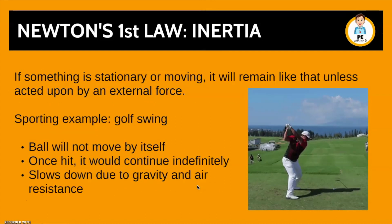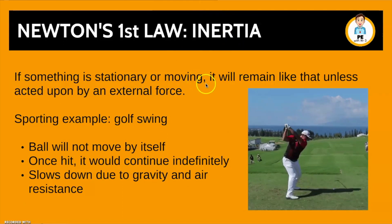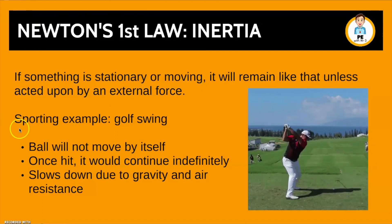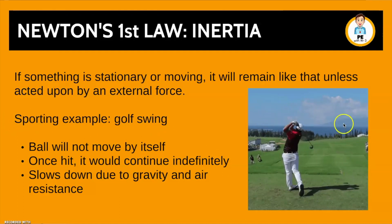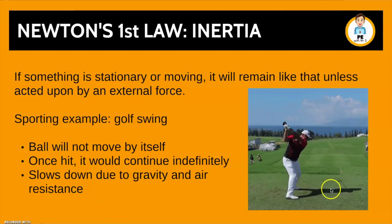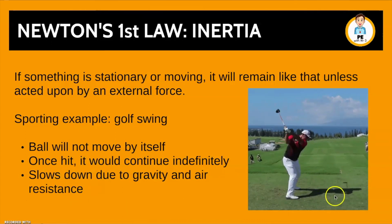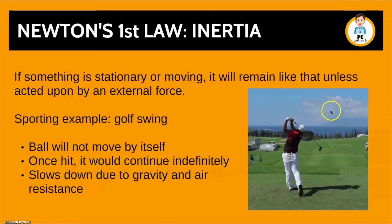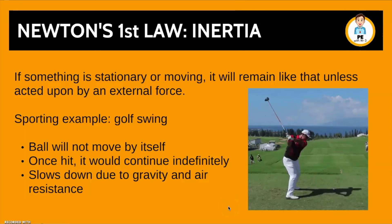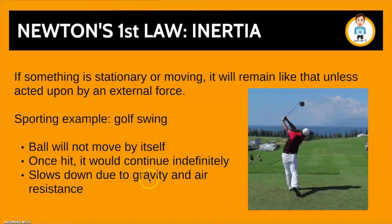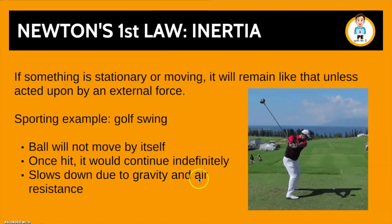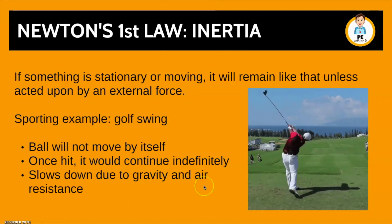Newton's first law is inertia. If something is stationary or moving, it will remain like that unless acted upon by an external force. Using a golf swing as our sporting example — the ball on the ground will not move by itself. It needs an external force, which in this case is the golf club. Once hit, theoretically it would continue going forever at the same speed. However, it slows down due to gravity pushing it back down to earth and a small percentage of air resistance.